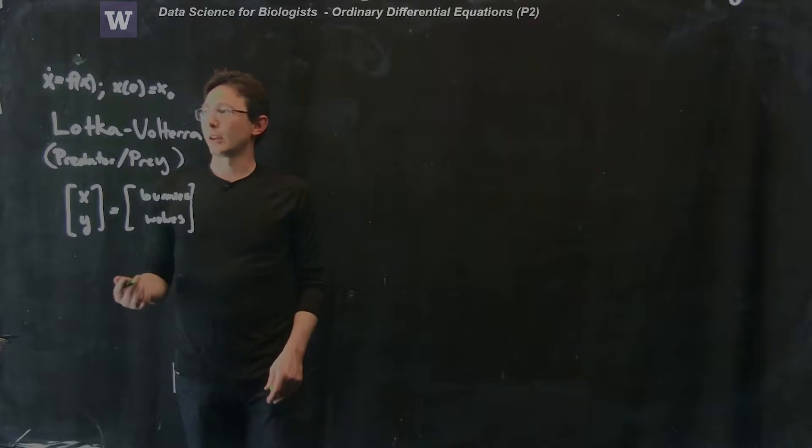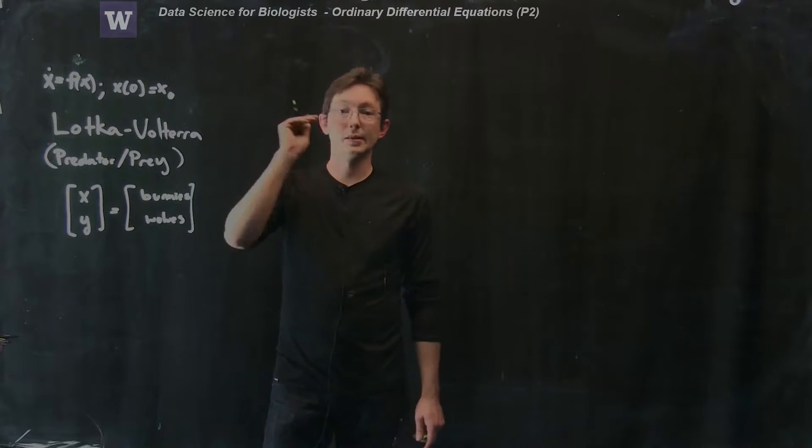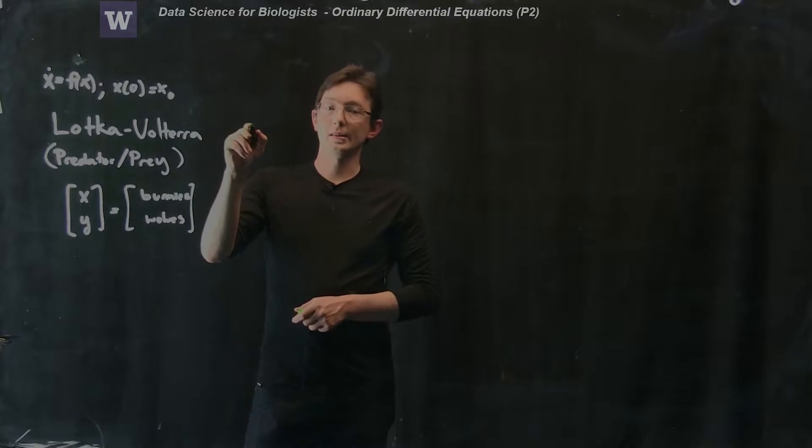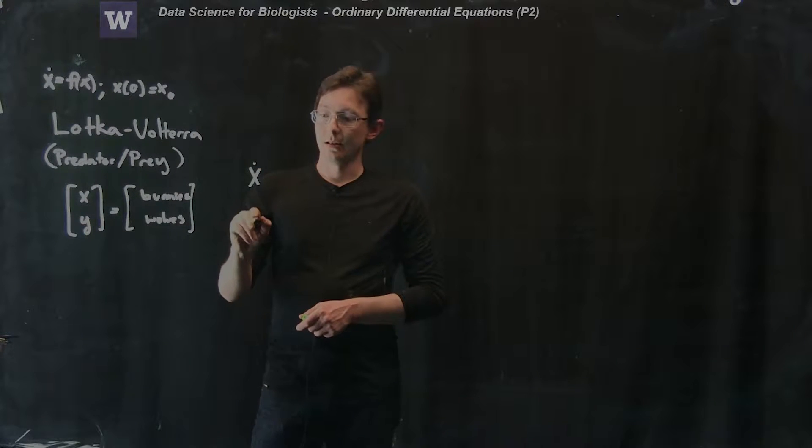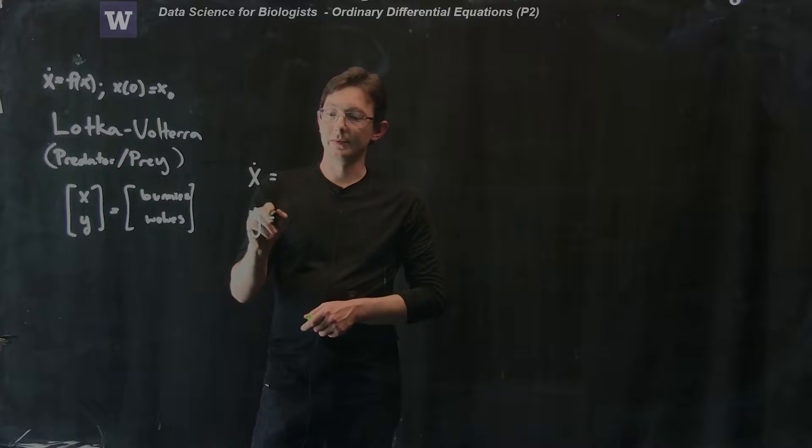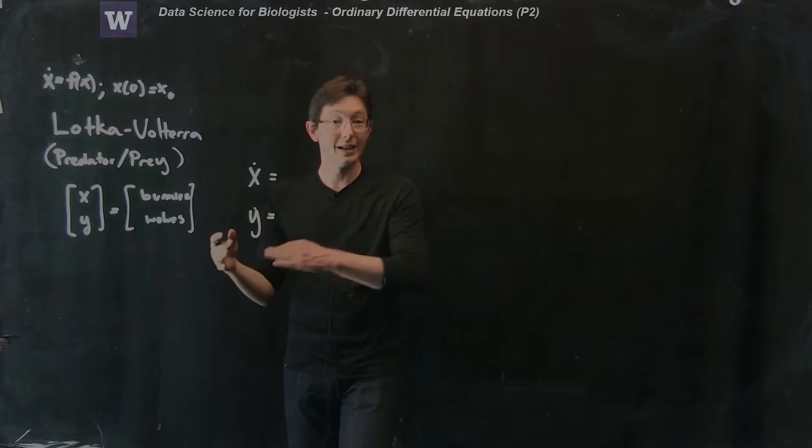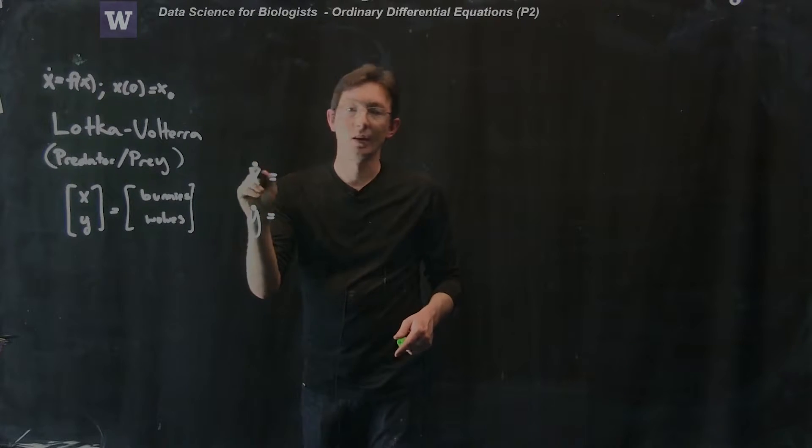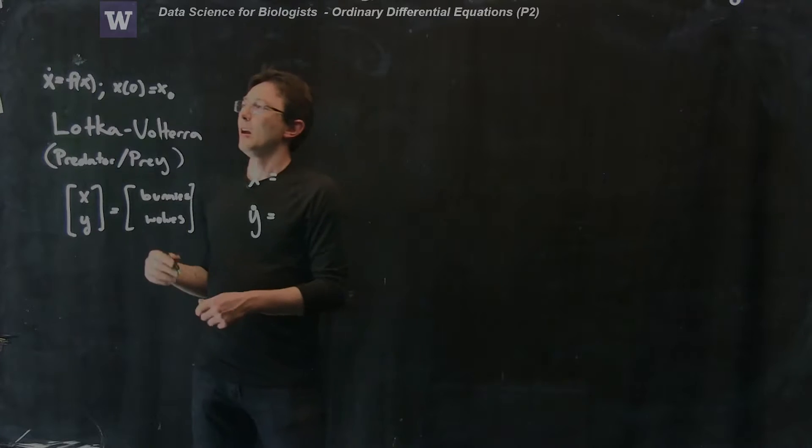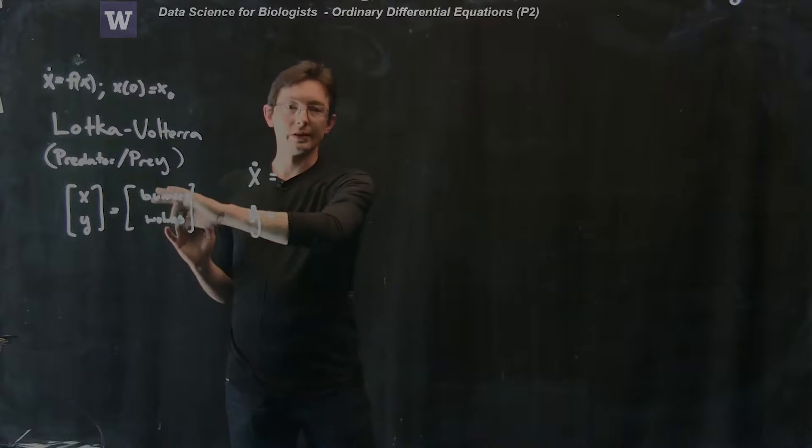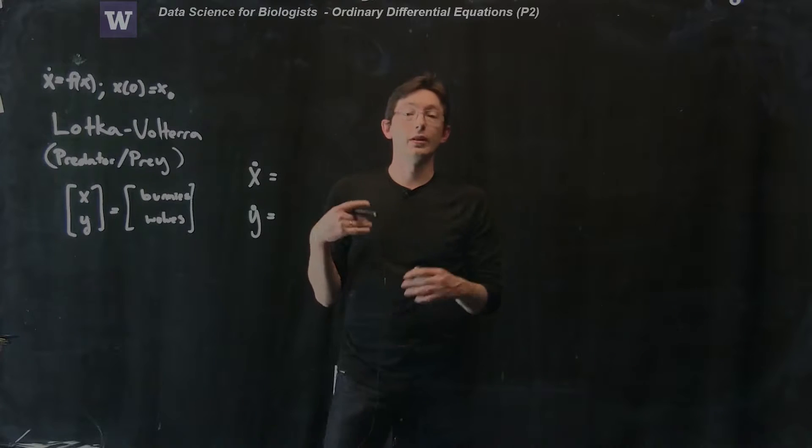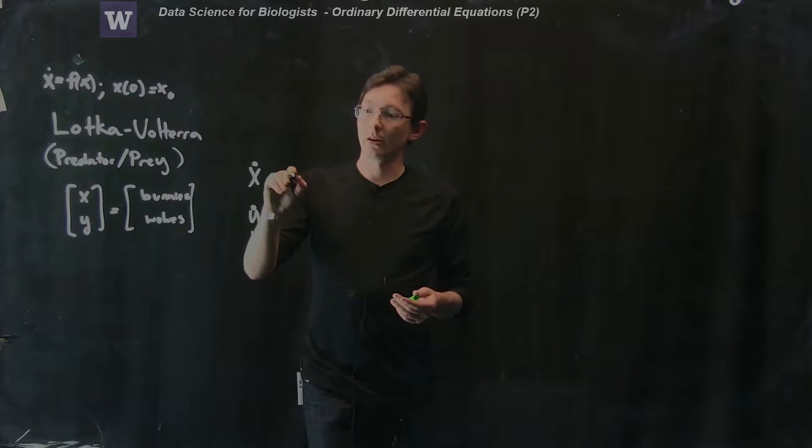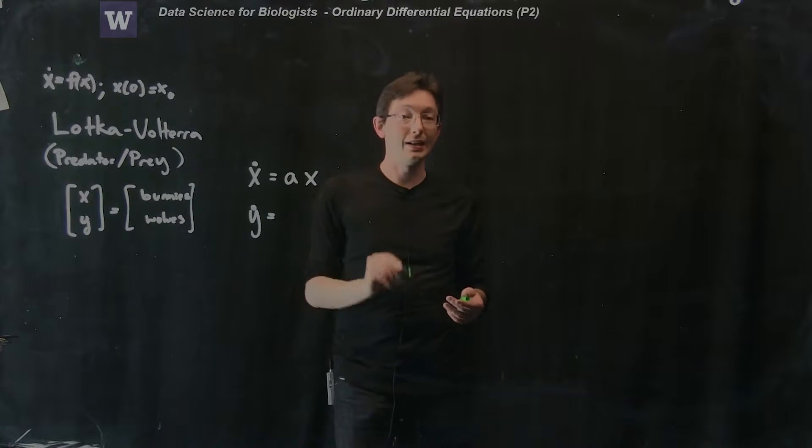We're going to cook up a differential equation for how the population of bunnies and wolves changes in time. We have X dot and Y dot, the derivative of my bunny population in time and the derivative of my wolf population in time. In the absence of any wolves, if all I have is bunnies, then bunnies are going to grow exponentially at some rate which I'm going to call A, so X dot equals A times X.